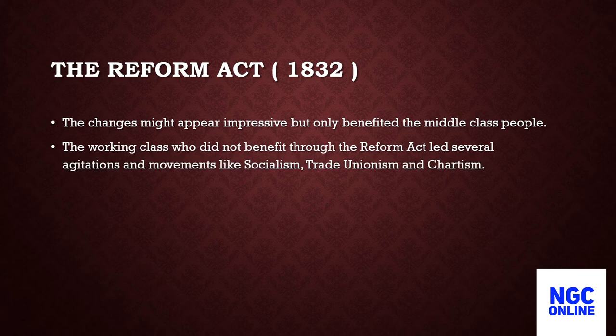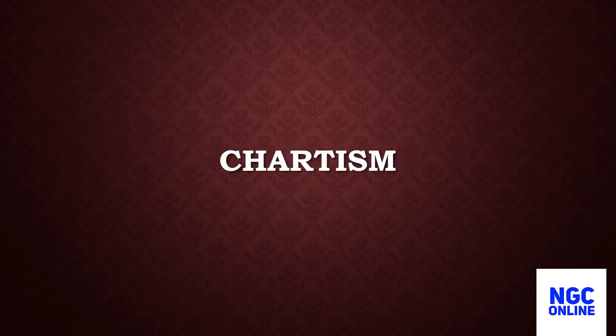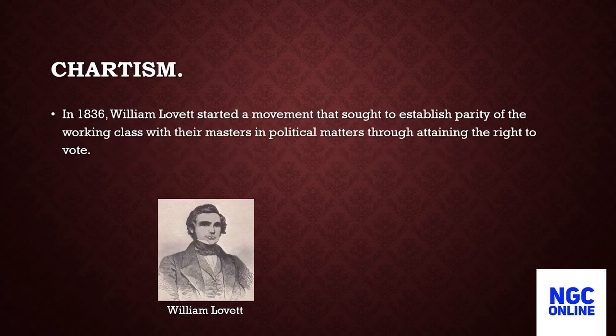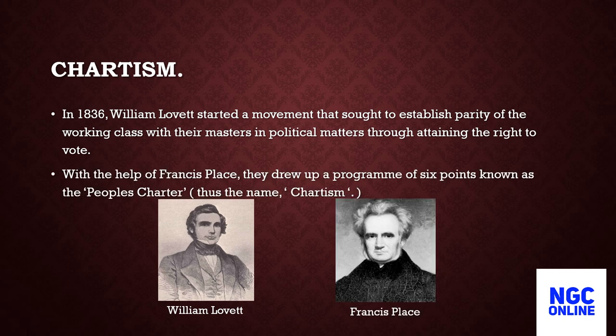The working class, who did not benefit from the Reform Act, led several agitations and movements like socialism, trade-unionism, and Chartism. In 1836, William Lovett started a movement that sought to establish parity of the working class with their masters in political matters through the right to vote. With the help of Francis Place, they drew up a programme of six points known as the People's Charter. So came the name Chartism.